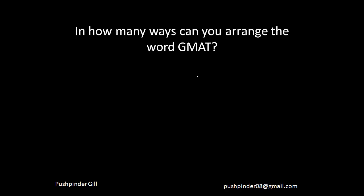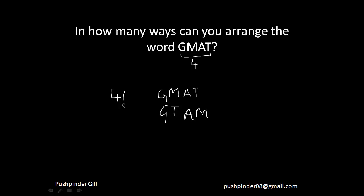In how many ways can you arrange the word GMAT? There are four objects which you want to arrange. So GMAT can be pretty easily arranged in four factorial ways. One arrangement would be GMAT, another would be GTAM, and so on — there can be four factorial arrangements because n things can be arranged in n factorial ways. So the word GMAT can be arranged in four factorial ways.